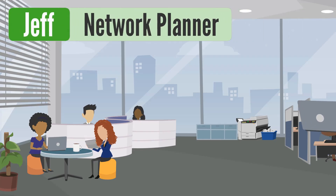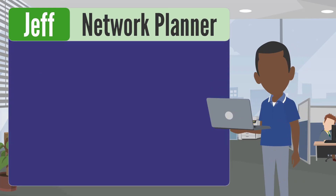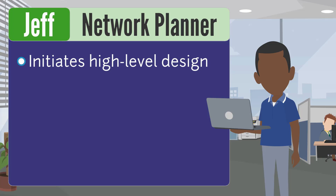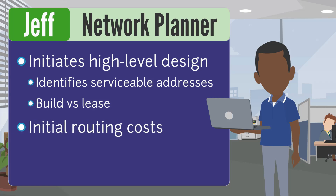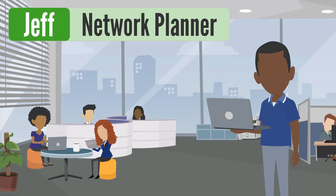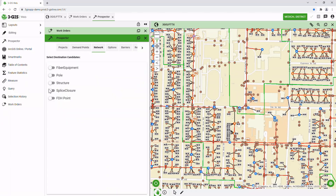In the planning phase, Jeff, the network planner, oversees strategic expansion of the network. He initiates the high-level design process by identifying serviceable address points to help decide when it is feasible to tie into the existing network versus leasing. He also compares initial routing costs while identifying additional revenue opportunities. Here, Jeff uses 3GIS Prospector to speed up routing while simultaneously finding the most optimal paths.